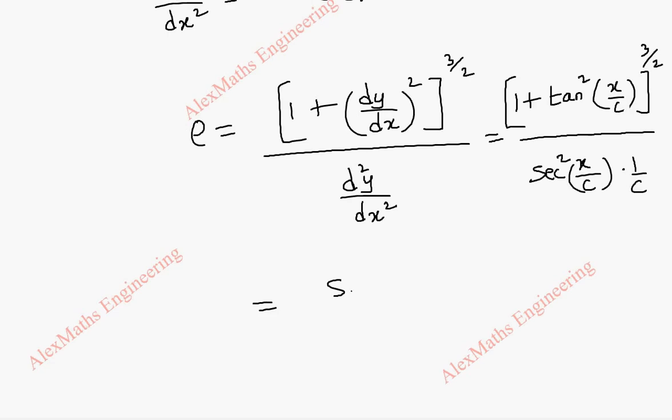So this becomes sec²(x/c), then whole power 3/2. And in the denominator we have sec²(x/c).